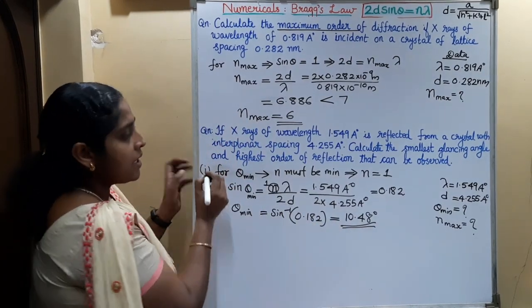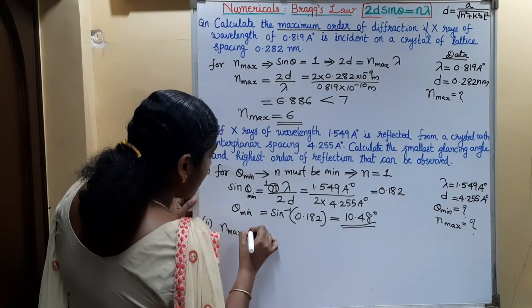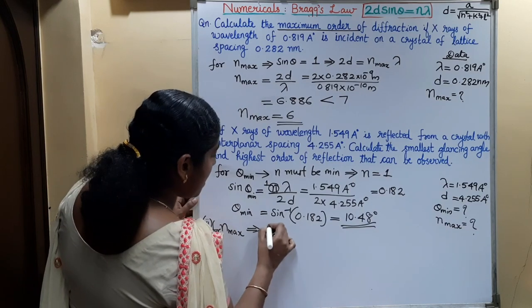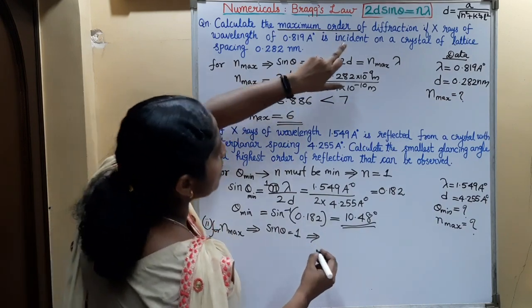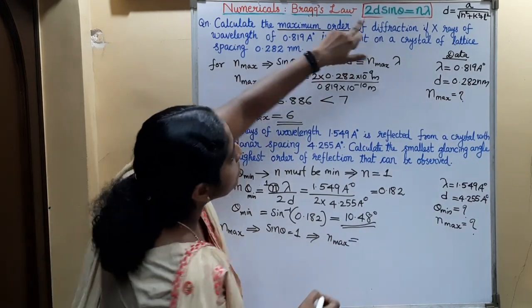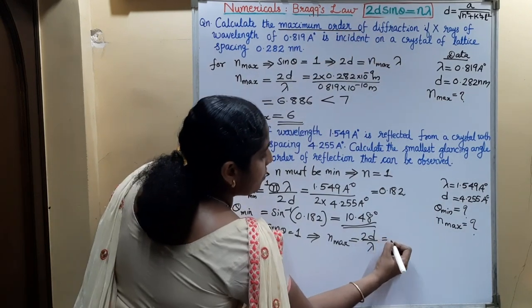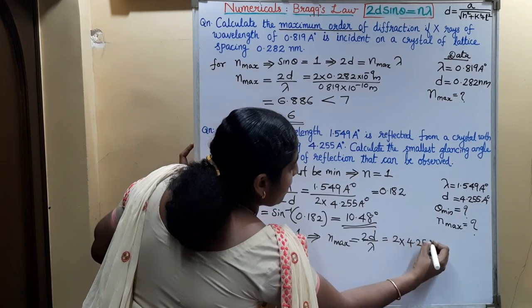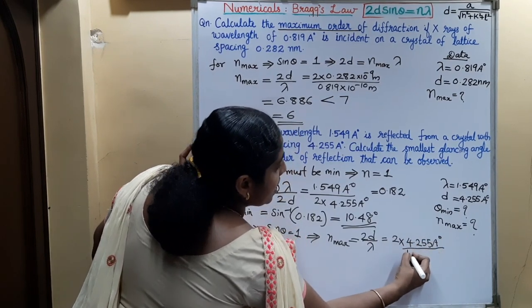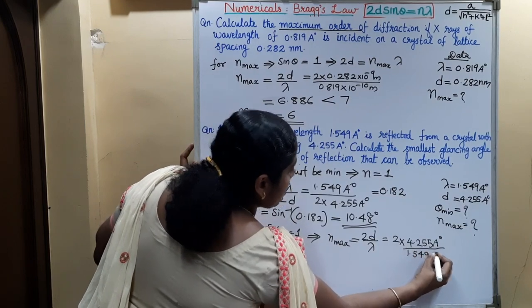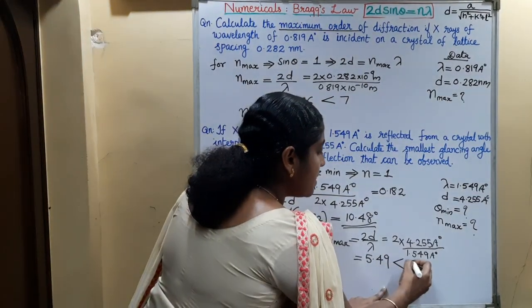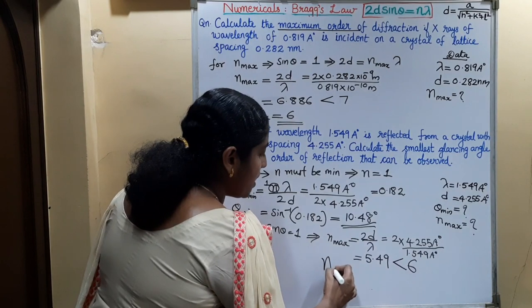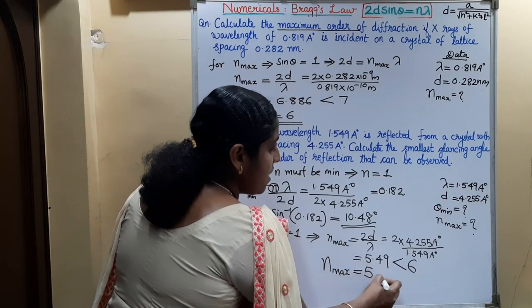For the maximum order, sine theta must equal 1. So maximum order equals 2D divided by lambda, that is 2 into 4.255 Angstroms divided by 1.549 Angstroms. On calculating, we get 5.49. Since this is less than 6, the maximum order possible is 5.